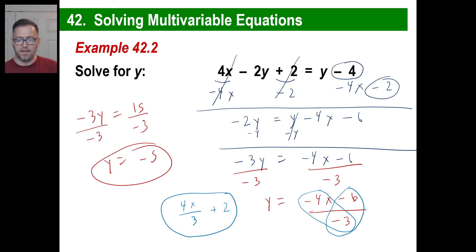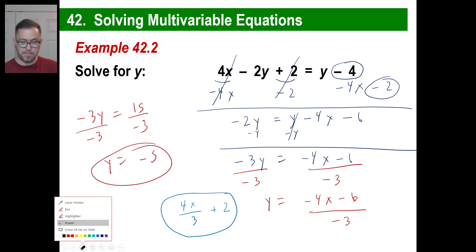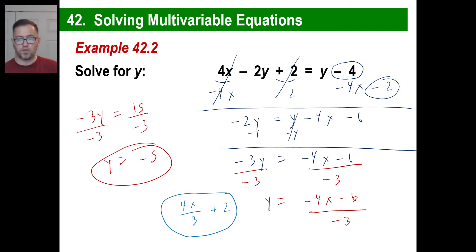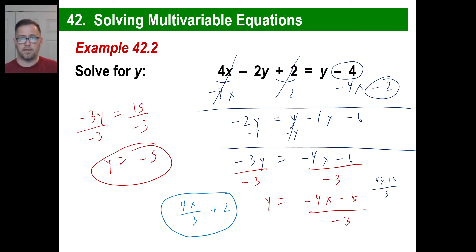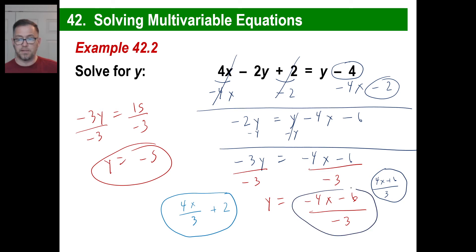Last thing: if you get an answer that says negative 4x minus 6 divided by negative 3, and the answer in the back of the book has every single one of the terms completely backwards — instead of negative 4x they have 4x, instead of negative 6 they have positive 6, instead of negative 3 they have 3 — you're fine. They might have reduced each fraction individually, or every single term is the opposite of every single term in your answer. Either way, you're in great shape. I'll explain more about that later. Pause and copy.